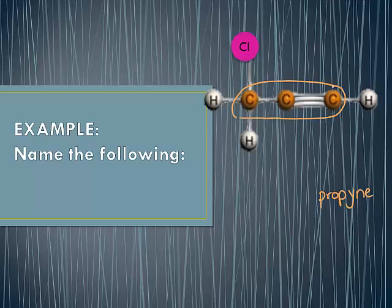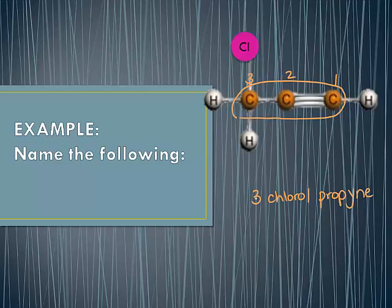The triple bond is the most important functional group in an alkyne, so we must start numbering from the right. So I go one, two, three. This happens to be 1-propyne, because the triple bond starts on the first carbon in the chain — it goes between the first and the second, but it starts on the first carbon. This also has a chloro group, and that chloro group is found on the third carbon in the chain. So this is 3-chloro-1-propyne. Numbers and letters are separated by a dash, making this 3-chloro-1-propyne.